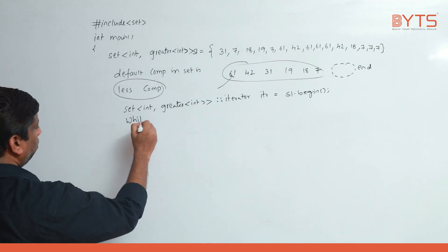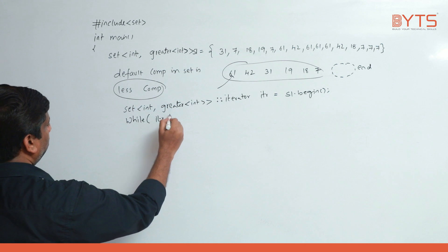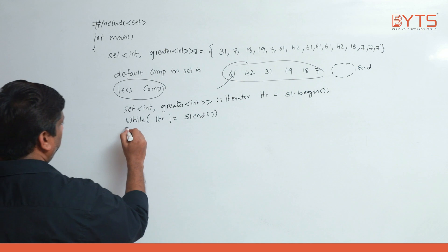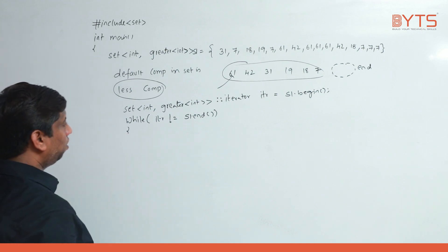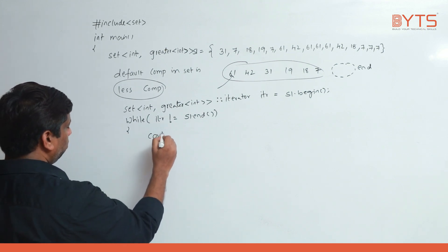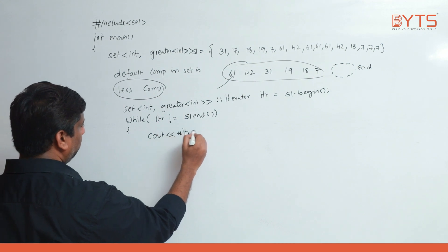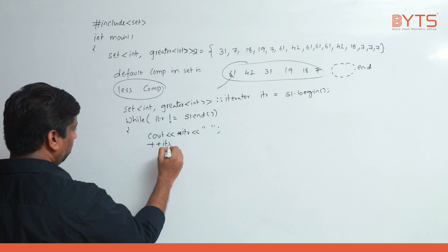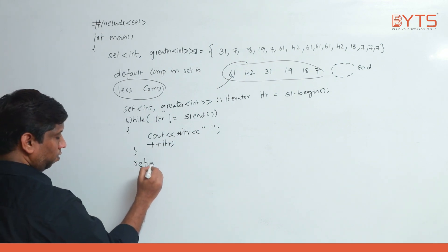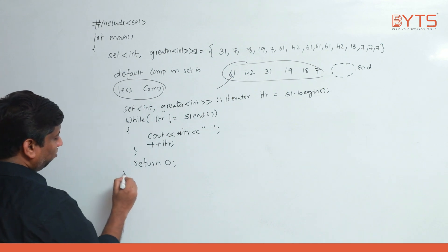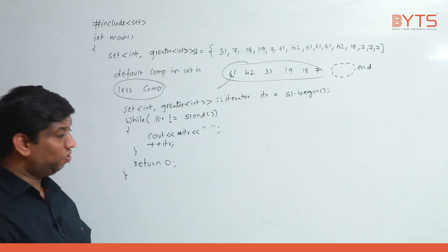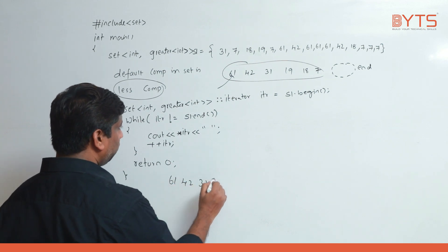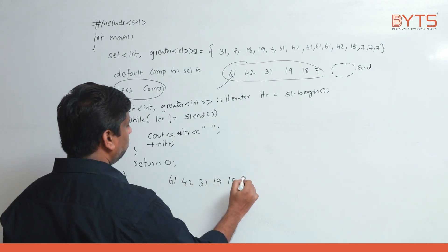while(itr != s1.end()) { cout << *itr << ' '; ++itr; } return 0. You can use a for loop or while loop — that is your choice. The output you will get is: 61, 42, 31, 19, 18, 7.